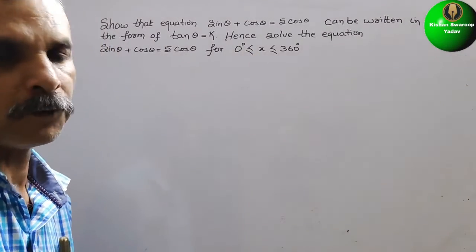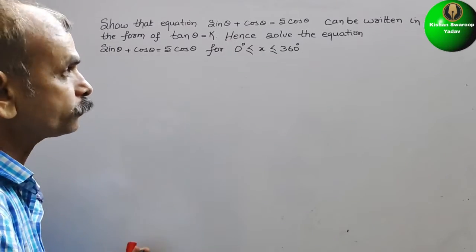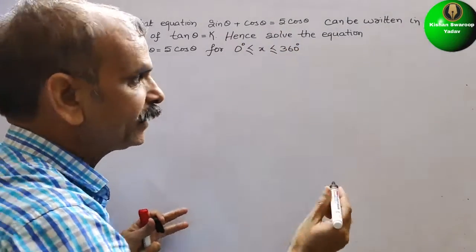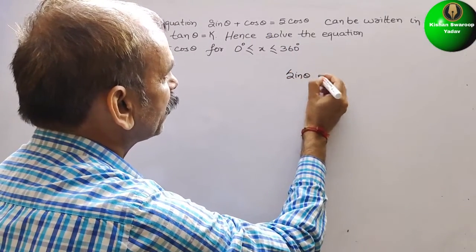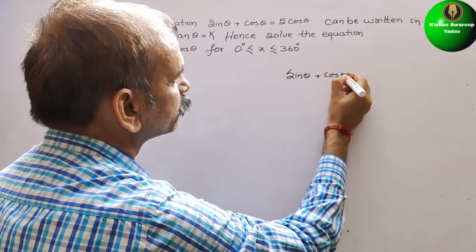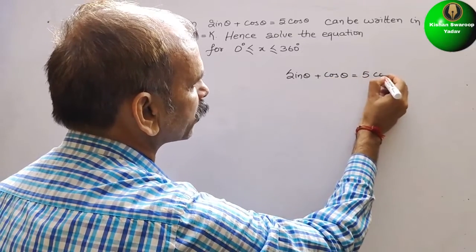Now, here what we have to do? Whatever they have given, just write that. So, this will be your sin theta plus cos theta equals 5 cos theta.